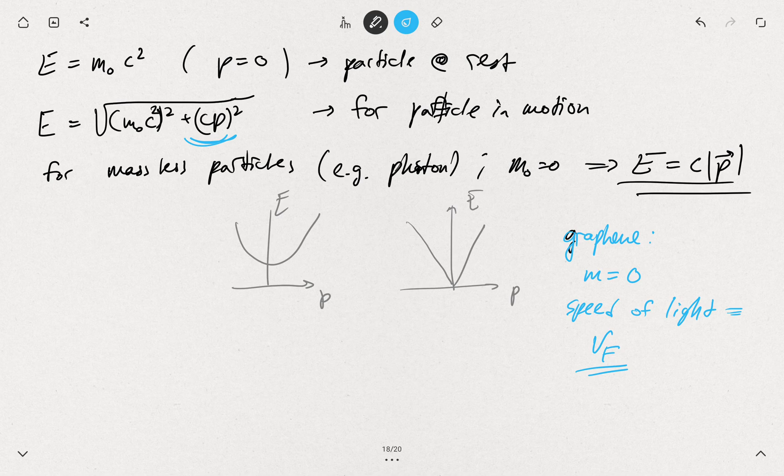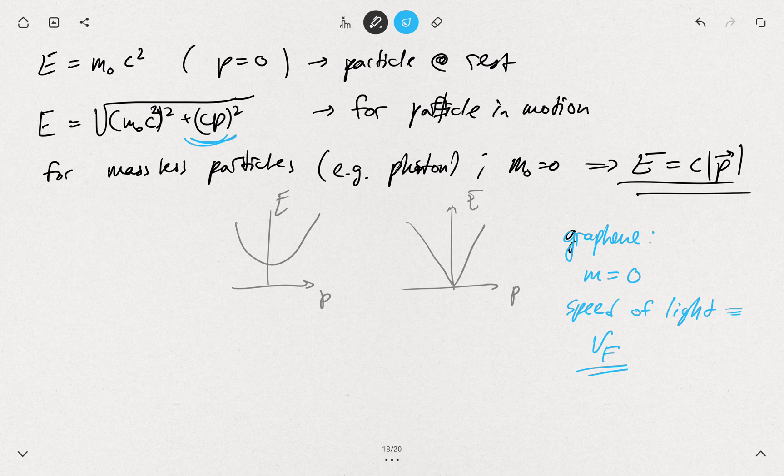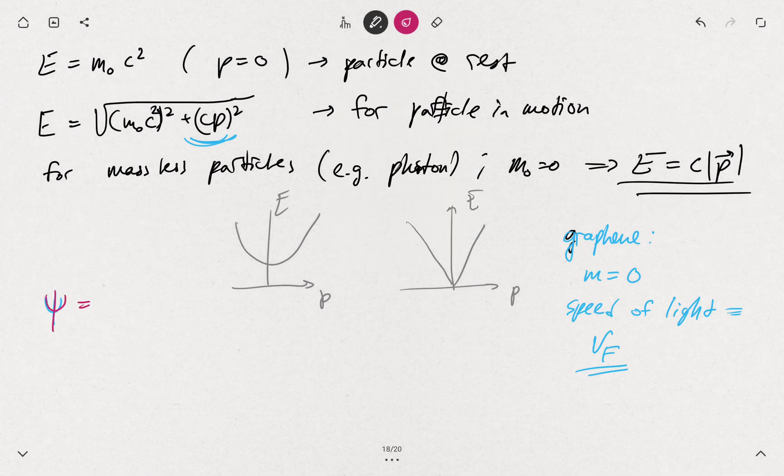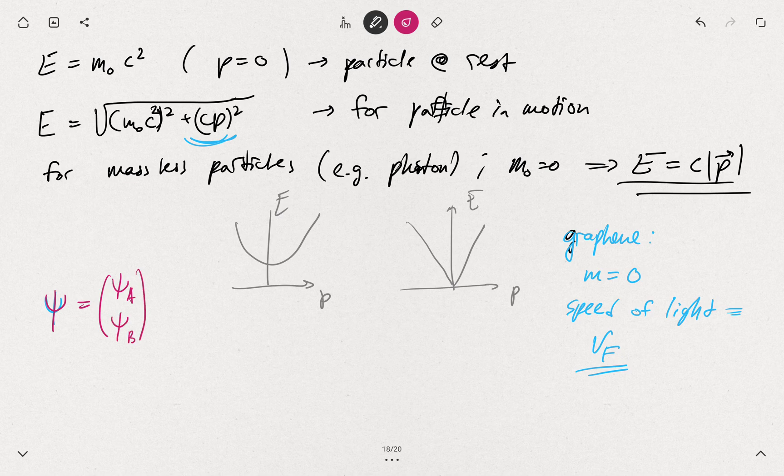More rigorously, the solution of the low energy Hamiltonian in the continuous regime gives you something very much the same as the Dirac solution to Klein-Gordon equation. It leads to a two-component wave function, and we saw that when we discussed the tight binding problem—our wave function has two components, one sitting on the A sublattice and the other on the B sublattice.